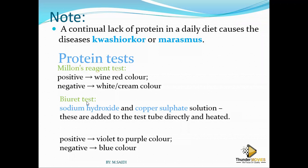Then there is Biuret's test. Biuret's test is made up of sodium hydroxide and copper sulfate. When you add Biuret's test to a sample containing protein, it is going to look violet to purple. If it is negative, it is going to remain blue. So if protein is present, it becomes purple; if protein is absent, it is blue — as long as you use Biuret's test. You have to know which test is being used and what color change it produces.